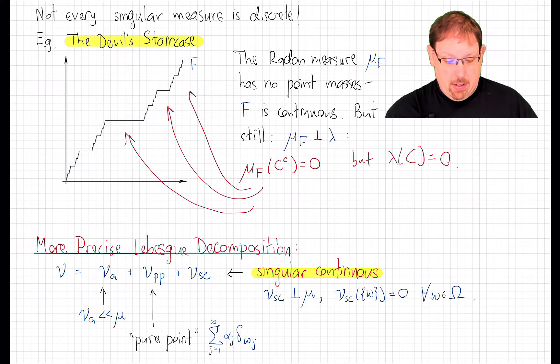And so here we have a measure, mu f, which is mutually singular from Lebesgue measure, but it has no point mass anywhere.